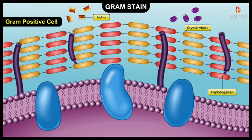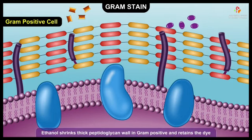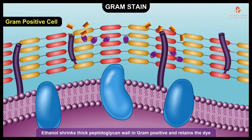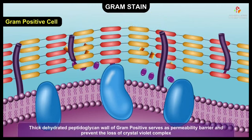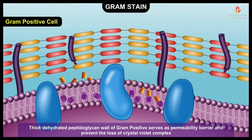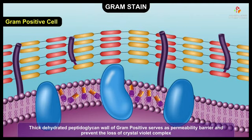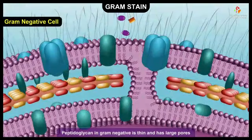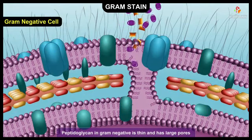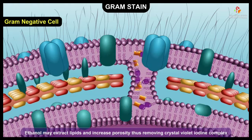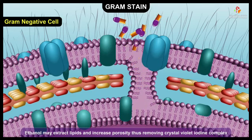Generally, the Gram stain correlates with the cell wall structure among bacteria. Ethanol is thought to shrink the thick peptidoglycan in Gram positive cells, thus retaining the dye. The thick, dehydrated peptidoglycan layer of Gram positive bacteria appears to be a permeability barrier, preventing the loss of the crystal violet-iodine complex. In contrast, the peptidoglycan in Gram negative bacteria is very thin and has large pores; ethanol may extract lipids and increase the porosity, thus removing the crystal violet-iodine complex.